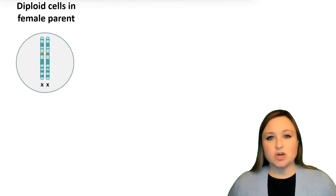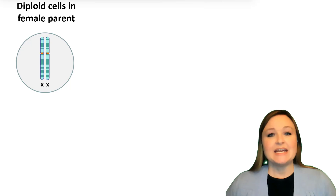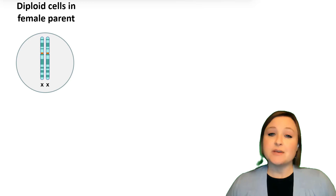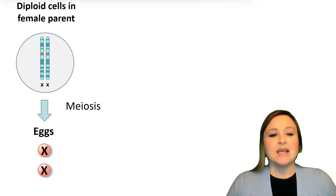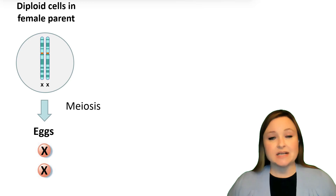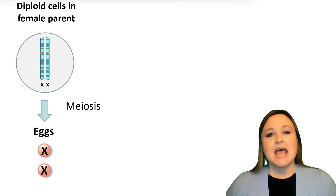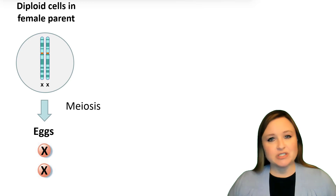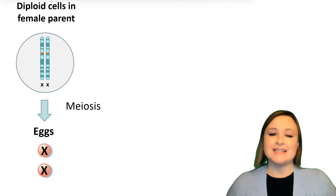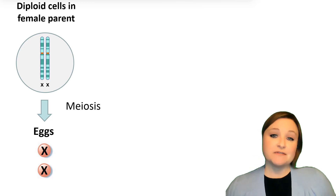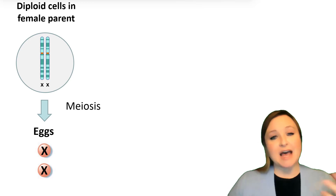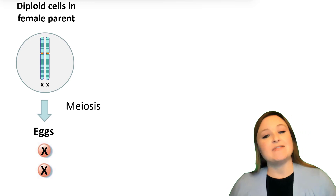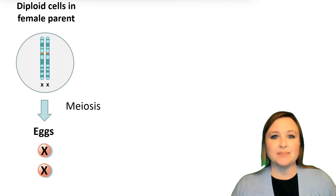So let's talk about how the X and Y chromosomes are passed along to the next generation. If we start with diploid cells in the female parent — the germ cells that will undergo meiosis — during meiosis, those germ cells are going to create eggs. And the pair of chromosomes are going to be separated into different eggs. Whereas the female parent has two X chromosomes, the eggs are going to have one X or the other X chromosome.